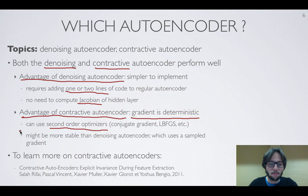There could be ways of sort of playing with the denoising autoencoder and still trying to use conjugate gradient and LBFGS, but just generally speaking, it might be more stable if we do this in the context of contractive autoencoder because the gradient is deterministic.